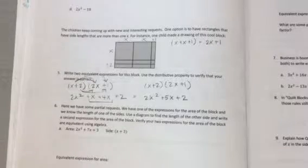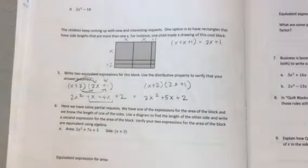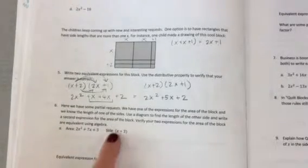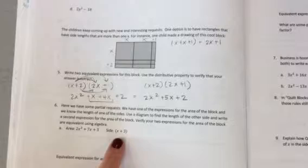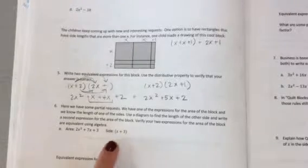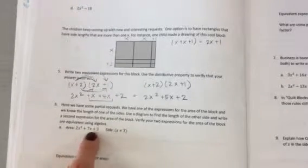Today you're going to be doing number 6 through 9. For number 6 there's 3 parts. They have given you one of the side lengths to make it a little bit easier for you to find the other side length given this formula.